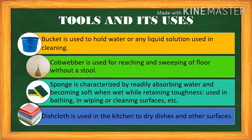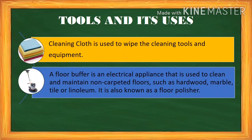Next is the sponge, characterized by readily absorbing water and becoming soft when wet while retaining toughness. It is used in bathing, wiping, or cleaning surfaces — most of us see this sponge when washing dishes at home. Next is the dishcloth, used in the kitchen to dry dishes and other surfaces. Typically made of cotton or other cloth such as microfiber, measuring 11 to 13 inches square. Next, the cleaning cloth is used to wipe cleaning tools and equipment — in Tagalog, we have basahan.